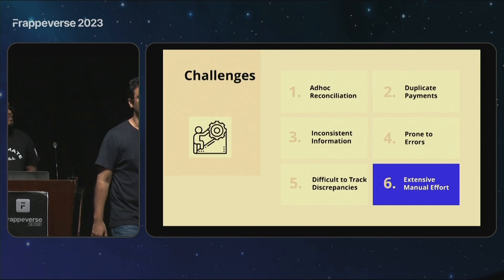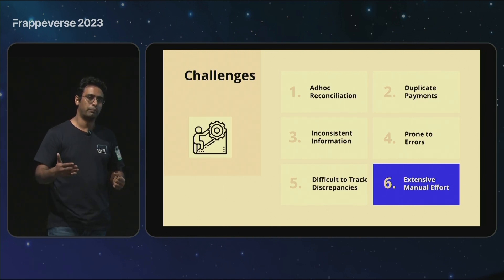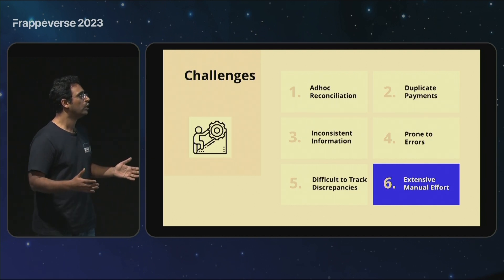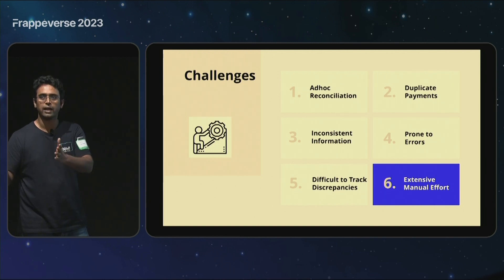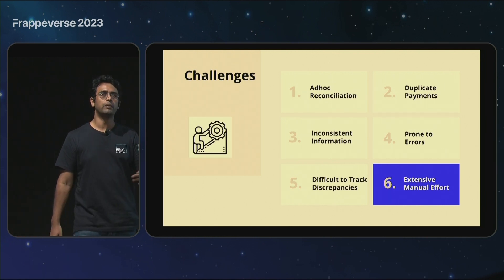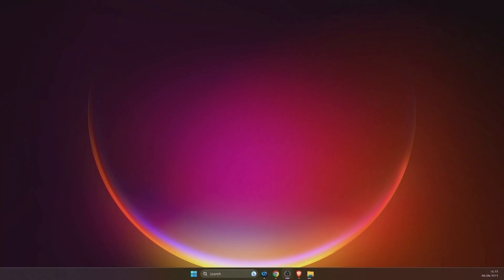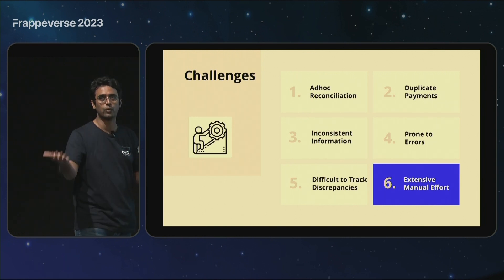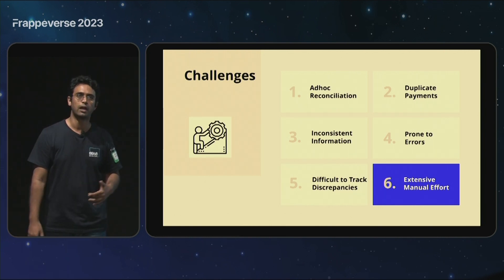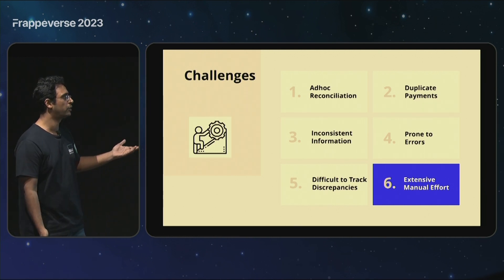Without bank integration, the challenges we face on a daily basis are: bank reconciliation is very infrequent, done on an ad hoc basis, so at any point in time you do not have real-time data of your bank account balance matching with your ERPNext balance. There are cases where duplicate payments are issued because they weren't tracked, or done on account and not against an invoice. Reference numbers and UTR numbers from the bank are not stored or only partly stored, so the information is inconsistent and manual, making it prone to errors.